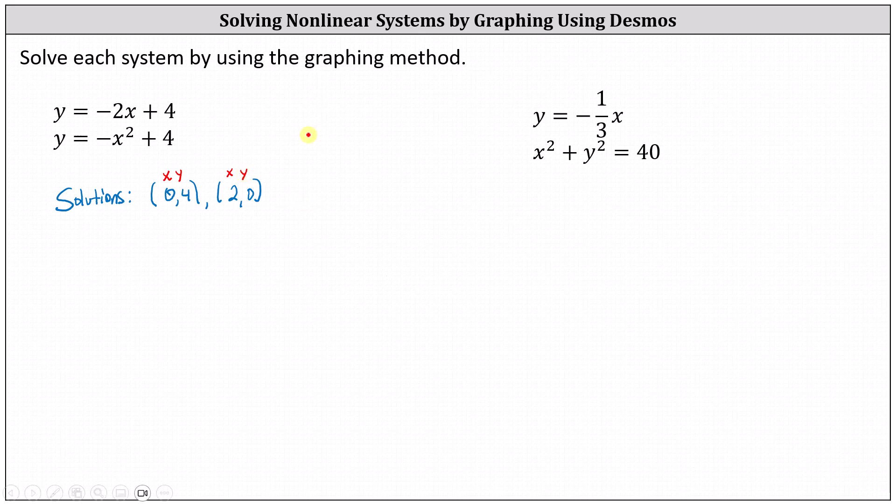Looking at our second system, we have y equals negative one third x and x squared plus y squared equals 40. One reason Desmos is so convenient is that we can enter any equation as it's given. For example, we don't have to solve the equation x squared plus y squared equals 40 for y, like you would in some graphing calculators.